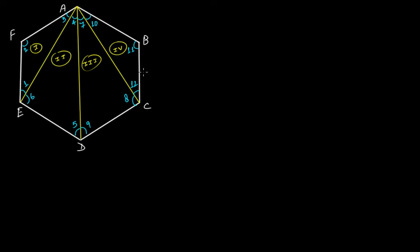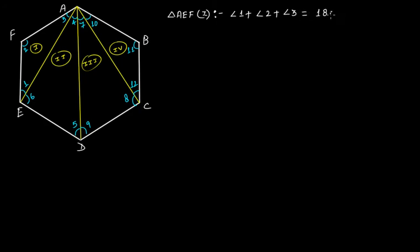Okay. Now, let us take triangle 1, that is triangle AEF. Now, this triangle AEF — if you apply the sum of the internal angles of a triangle, that is equal to 180 degrees. So, angle 1 plus angle 2 plus angle 3 is equal to 180 degrees.